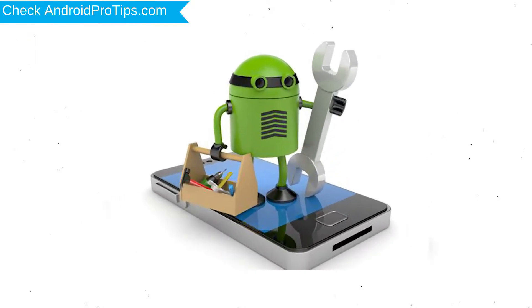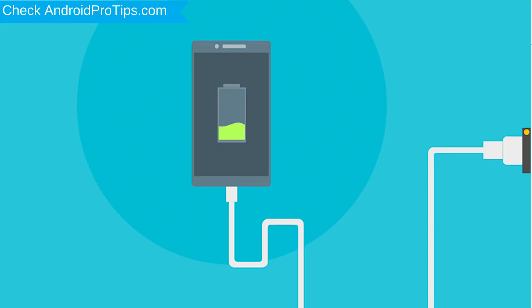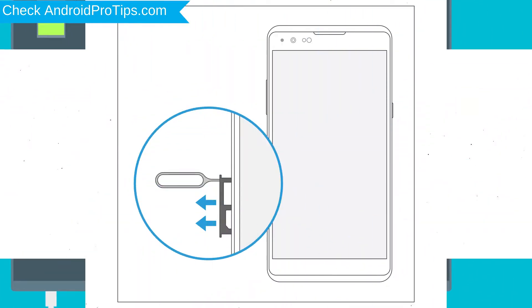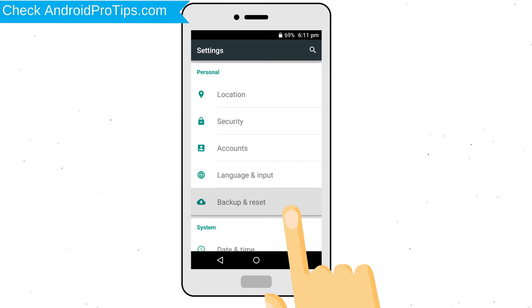Before resetting your mobile, your mobile battery must be above 50%. Remove SD cards and SIMs. Back up your Android mobile data if possible.